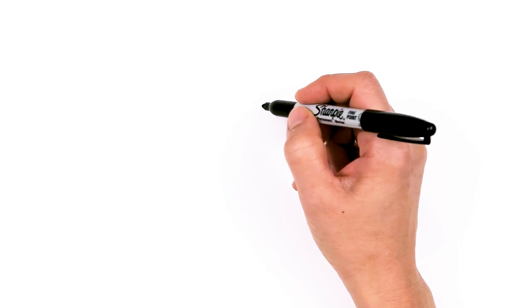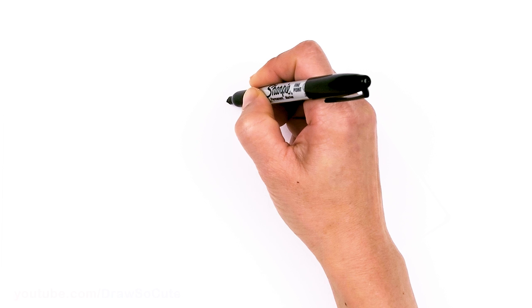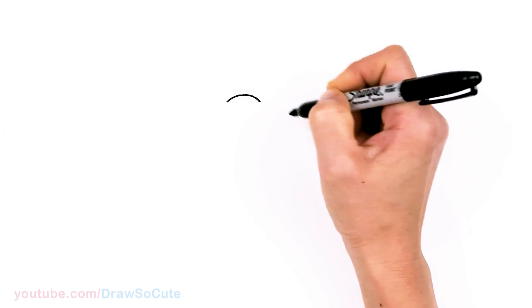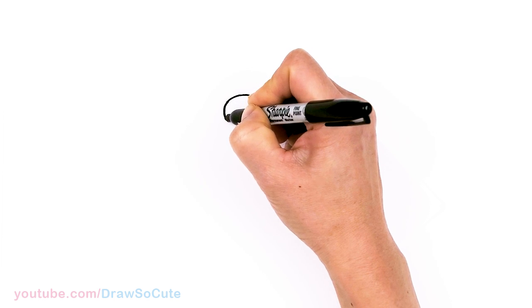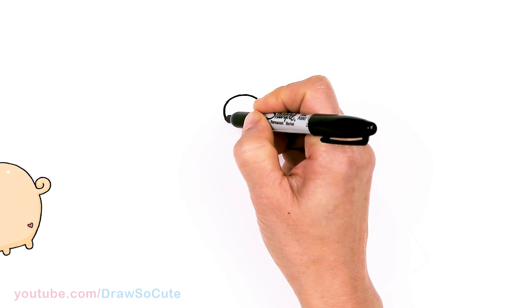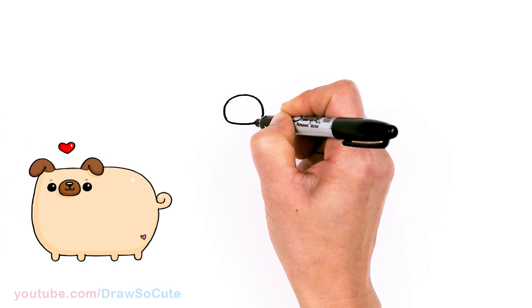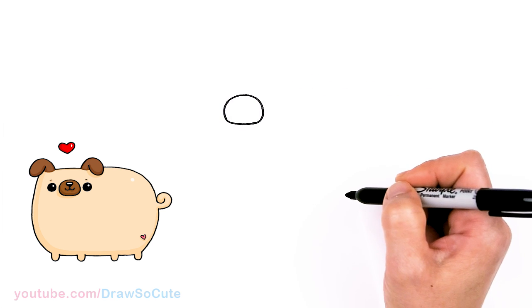To draw this cute pug let's first start by drawing an oval for the mouth and nose area. So let's come right here and I'm just gonna start with a curve at the top and then I'm gonna bring it down right here a little bit longer, taller, and then towards the bottom it's going to be a little bit flatter. There. So we created this little shape right here, this little oval.